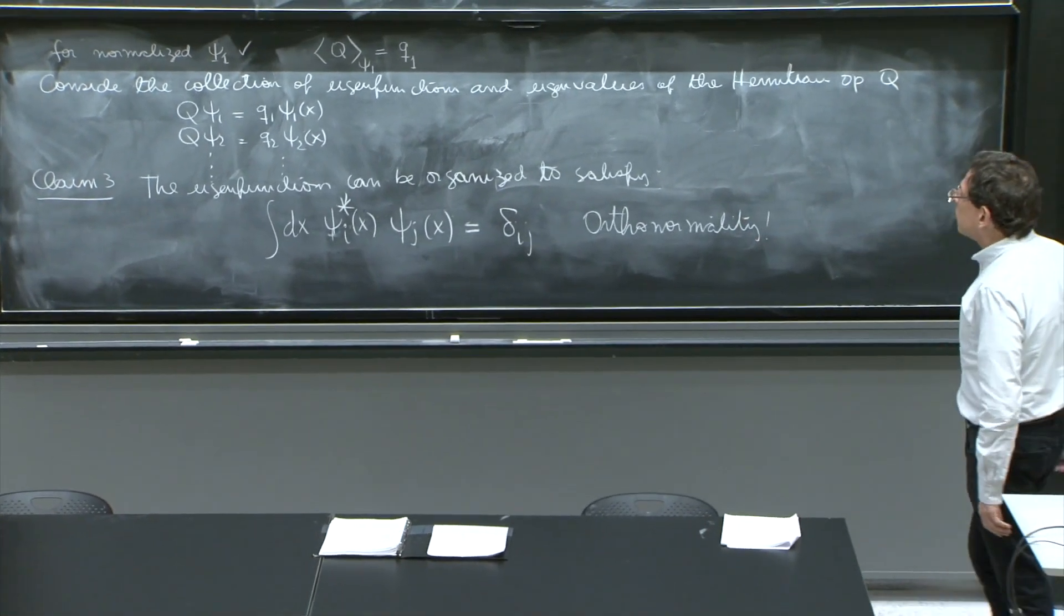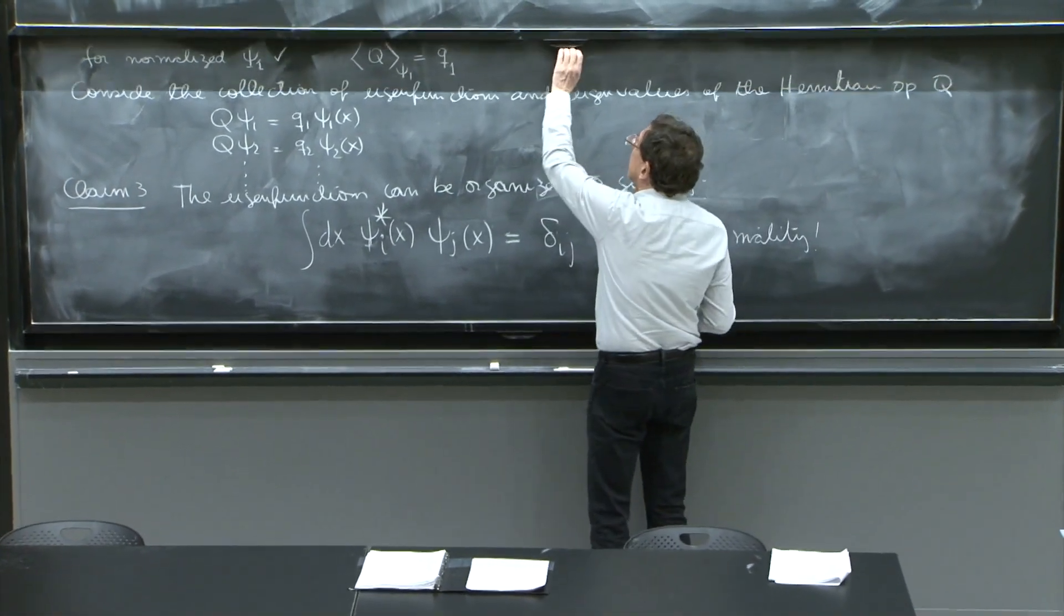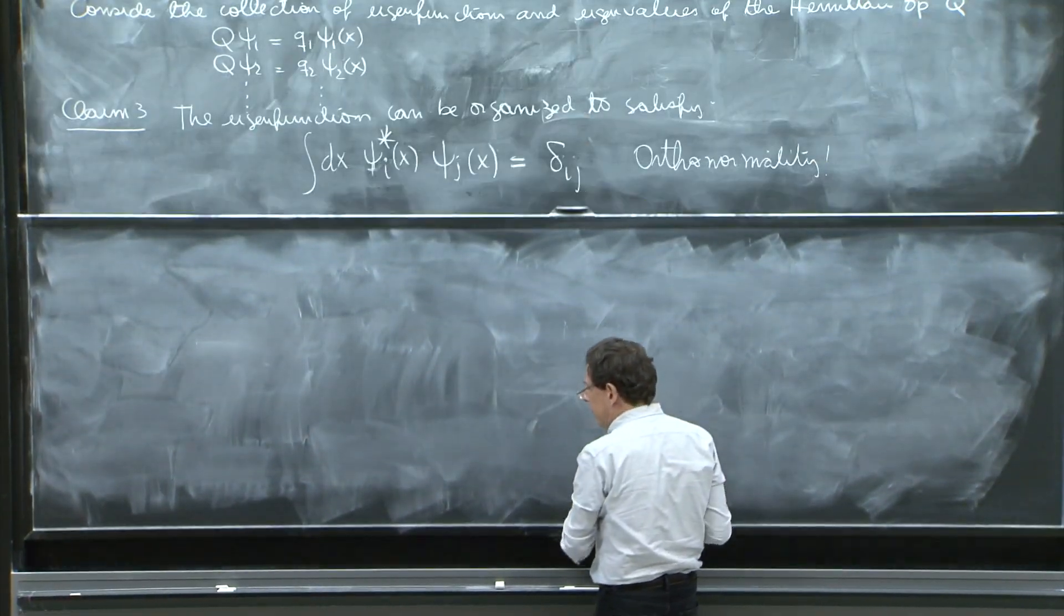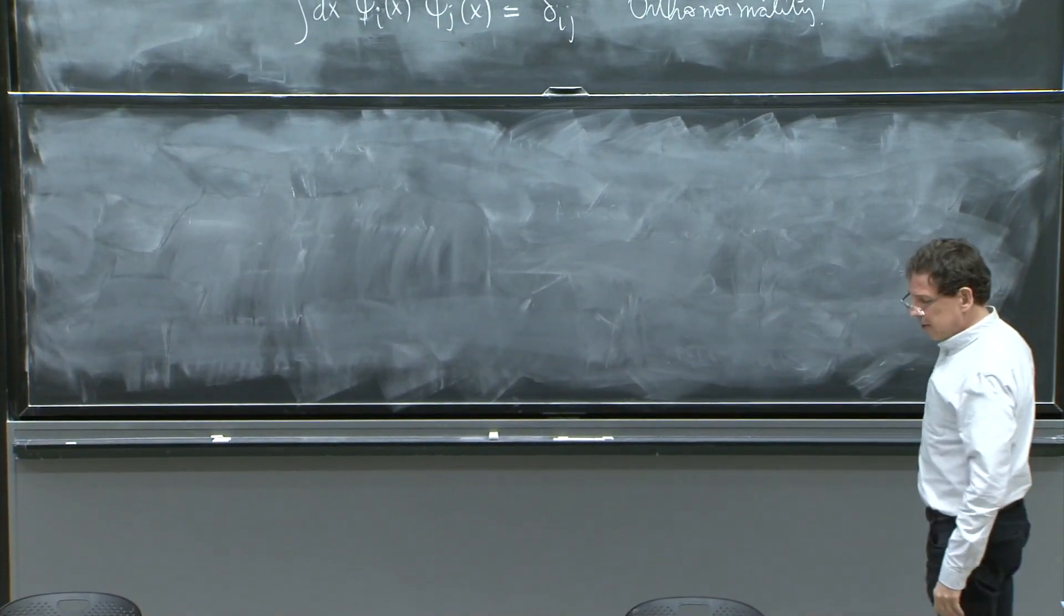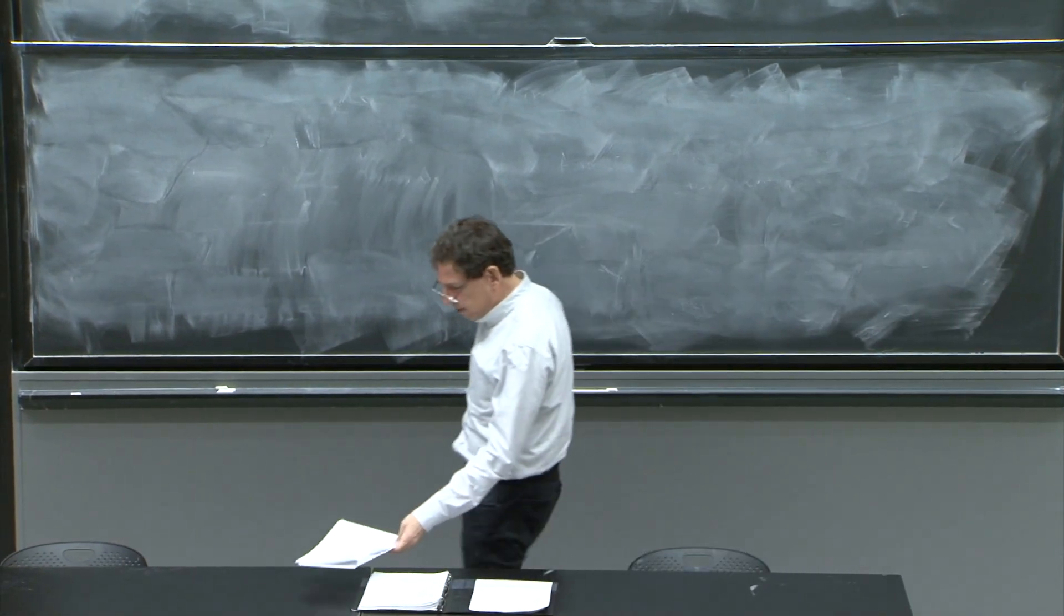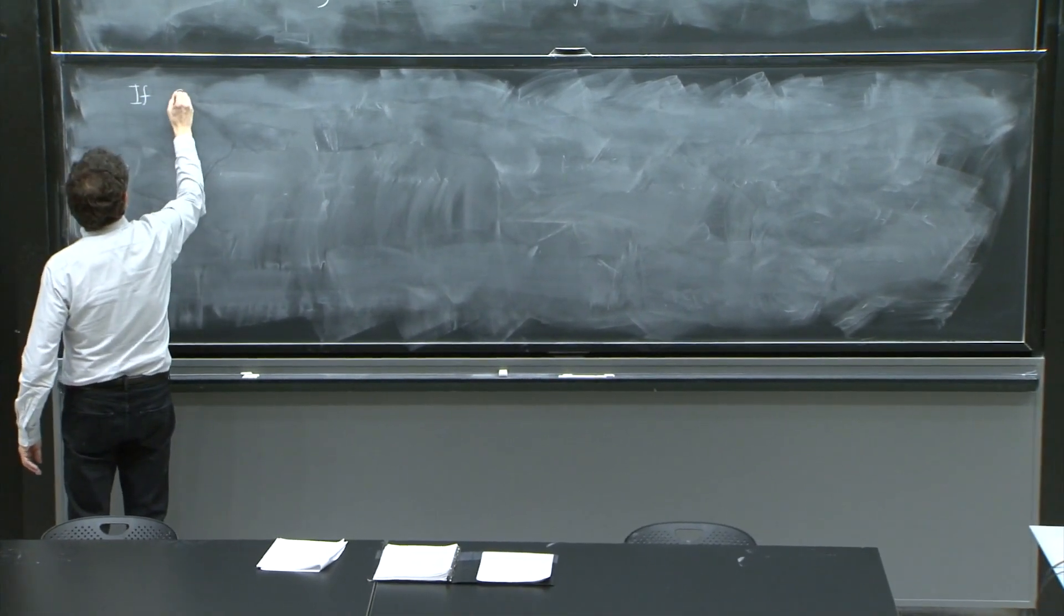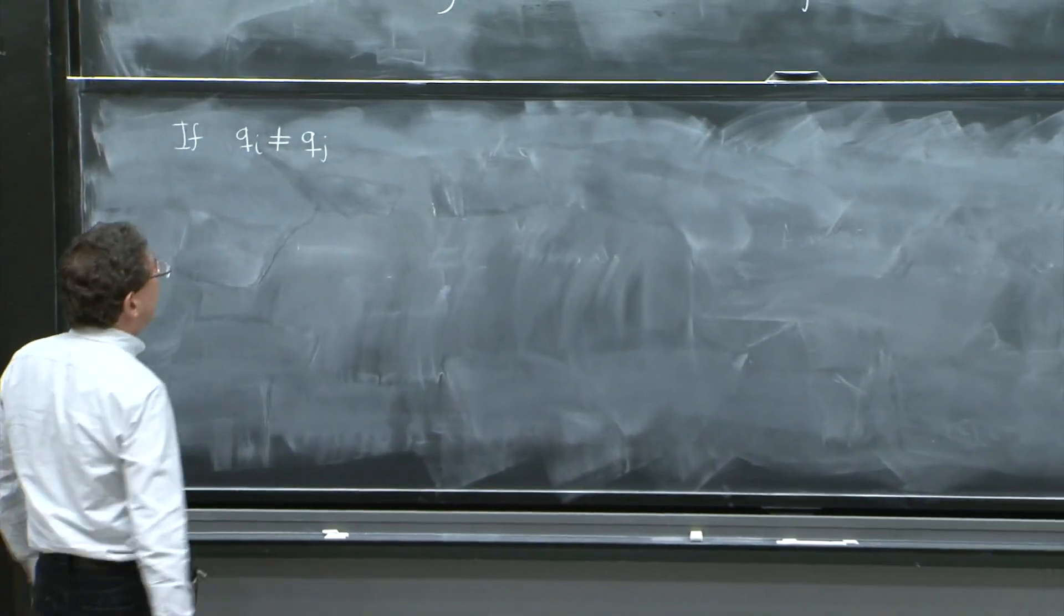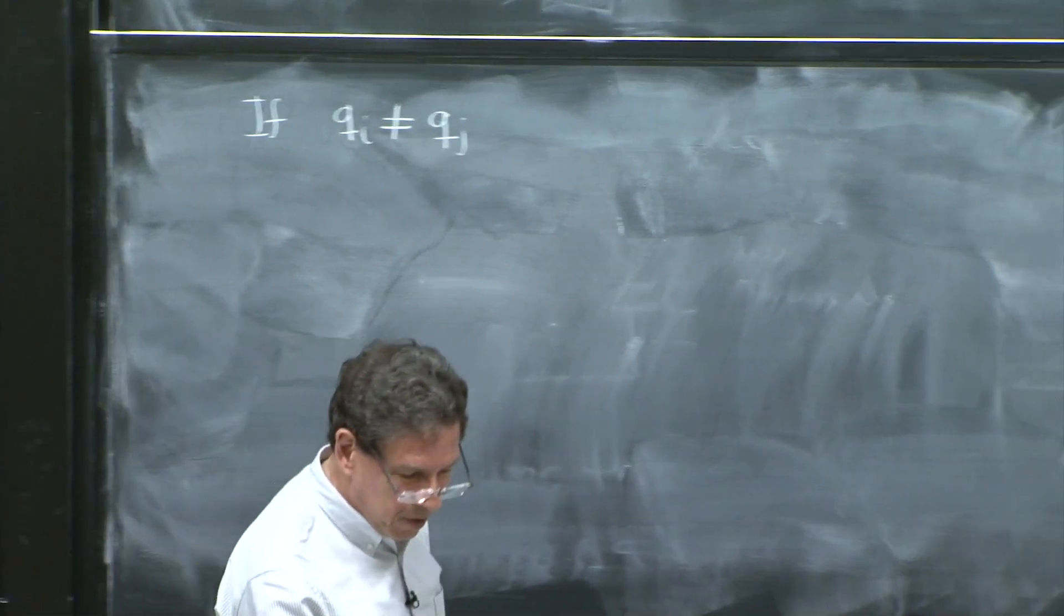So what do I want to do? I want to prove one part of this, which is the part that is doable with elementary methods. And the other part is a little more complicated. So let's do this and consider the case where qi is different from qj. I claim I can prove this property. We can prove this orthogonality.